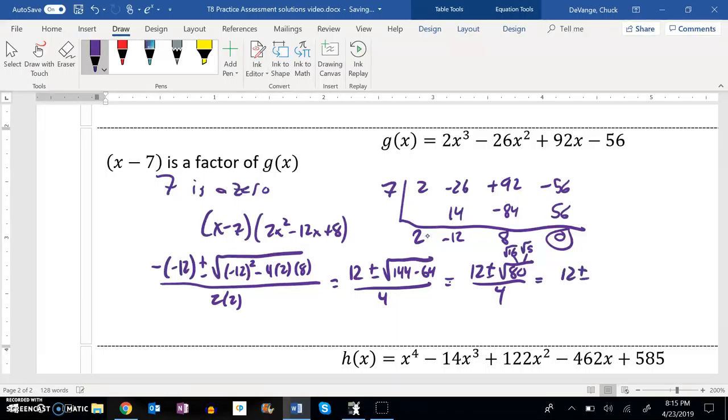So I have 12 plus or minus, the square root of 16 is 4. Square root of 5 is just square root of 5, divided by 4. So now both these things are divided by that 4. So 12 divided by 4 is 3. 4 divided by 4 is 1, leaving me root 5. So there's my other two zeros, 3 plus or minus root 5.